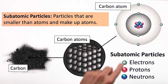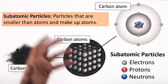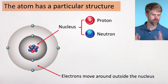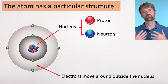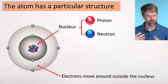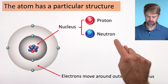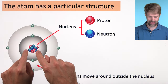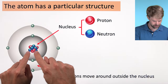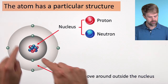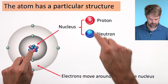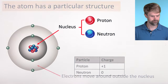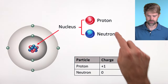The TEAS expects you to know some information about these subatomic particles and how they relate to each other. There are three main types: the electrons, shown in greenish gray; the protons, shown in red; and the neutrons, shown in blue. An atom has a particular structure — the protons, neutrons, and electrons aren't just jumbled together. The protons and neutrons are found in the center of the atom in what we call the nucleus, and the electrons move around outside of the nucleus.